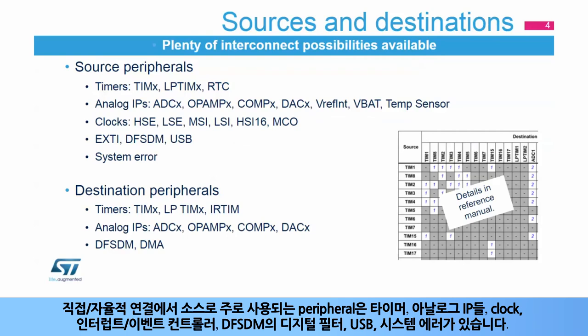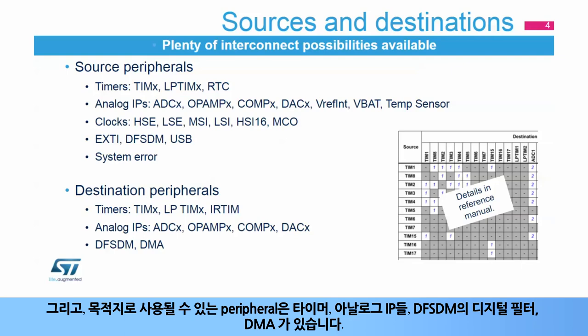The main peripherals having direct autonomous interconnections are timers, analog IPs, clocks, extended interrupt and event controller, digital filters for sigma delta modulators, USB, and system error for the connection sources. And timers, analog IPs, digital filters for sigma delta modulators, and direct memory access controllers for the connection destinations.